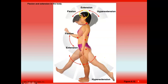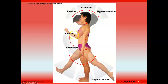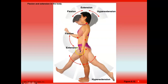The same applies to the head: bending it forward is flexion, backward is hyperextension. Lifting your arm straight up at the shoulder — not flexing at the elbow — is also flexion of the arm.